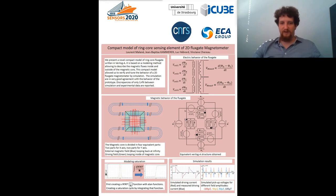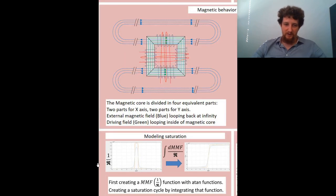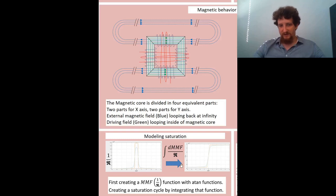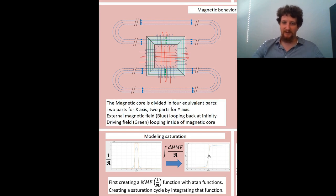In order to model the fluxgate, we also need to model the saturation of the ferromagnetic core. To do that, we started by creating this curve here, which is the inverse of reluctance relative to MMF. Then we integrated it to obtain the flux relative to MMF and obtained the following curve. This allows us to change the sharpness of the transition between saturated and unsaturated states.